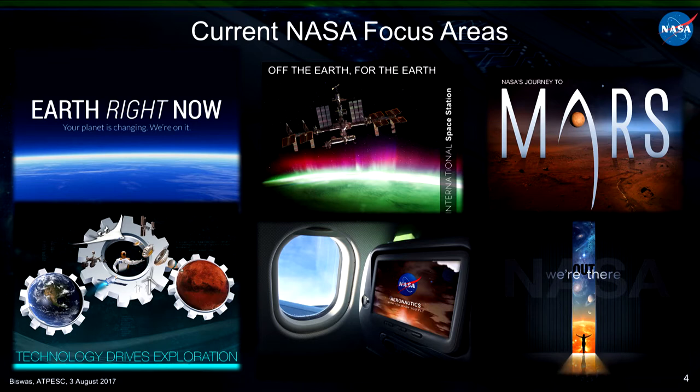Right now NASA does not have a shuttle, so we transfer crew to the station using Soyuz with the Russians. But the idea is that commercial companies will do low Earth orbit missions. The third focus area is beyond the Moon — Mars and beyond, both robotic and human missions. The fourth area is technology that must have a trickle-down effect on the betterment of humankind.